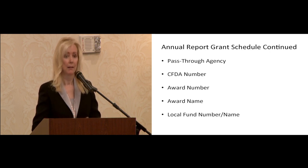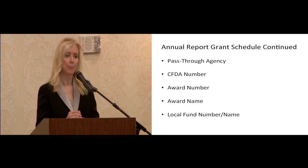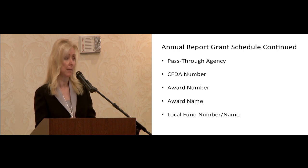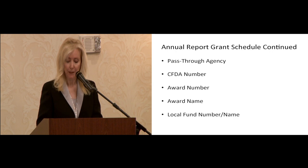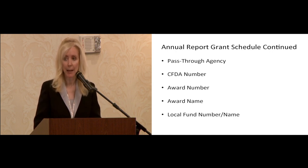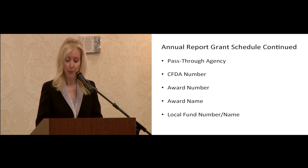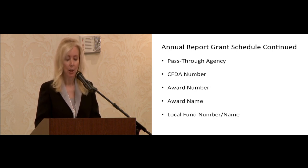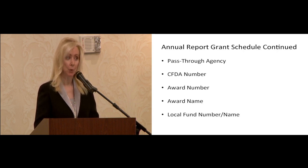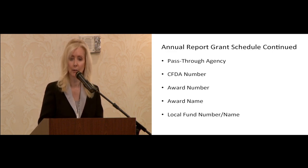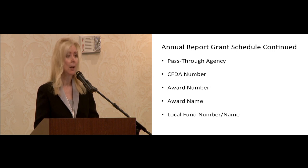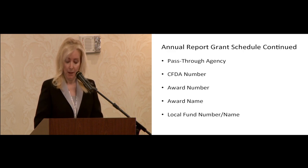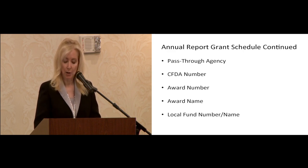If it says state grant in some way, that's fine. But a lot of times they might not identify it, so you really need to make sure. If the award indicates that it's a combination of state and federal but it's not clear as to the percentage, you need to find out from the awarding agency and request documentation letting you know what the percentages are. It's very important that you know what percentage of the money passed down to you is federal and what is state.